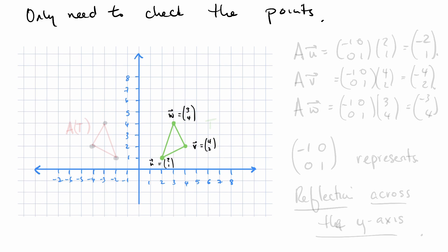Here is a second graph of our triangle in R3. Let's just work out what happens. What is AU? This is negative 1, 0, 0, 1 times 2, 1, which is negative 2, 1. That is here.